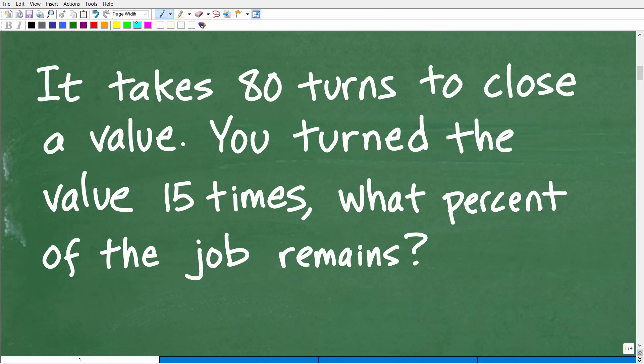All right, so here is our problem. And the first thing you always do in any problem in mathematics, especially a math word problem, and any problem just in general, you need to understand the problem. So reading the problem one time is not adequate. I always like to use the rule of three. Read the problem at least three times before you start to do anything. Before you start writing stuff down, just think about the problem. Let your brain kind of get engaged here. So we have this valve where it takes 80 turns to close the valve fully. You turned it 15 times. What percent of the job remains?